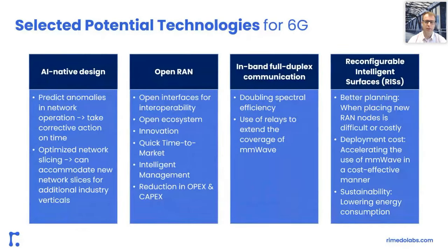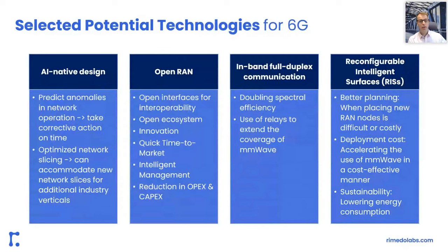Speaking about 6G, there are multiple use cases and technologies on the table. One repeated over and over is Configurable Intelligent Surfaces — RIS. But we also see Open RAN and AI-native design discussed in many places as part of 6G. With 5G, Open RAN and AI functionality were brought in after 5G was already in place. With 6G, there is a possibility they will be part of the native design. The question for the panel is: will AI and Open RAN brought together be part of 6G as a native design, or should they be a separate track?